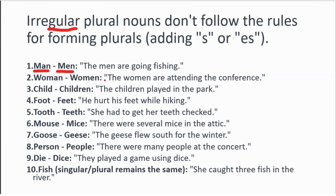Let's see how they are used in sentences: 'The men are going fishing.' 'The women are attending the conference.' 'The children played in the park.' 'He hurt his feet while hiking.' 'She had to get her teeth checked.' 'There were several mice in the attic.' 'The geese flew south for the winter.' 'There were many people at the concert.' 'They played a game using dice.' Also, some nouns like 'fish' have the same singular and plural form — 'She caught three fish', not 'three fishes'.